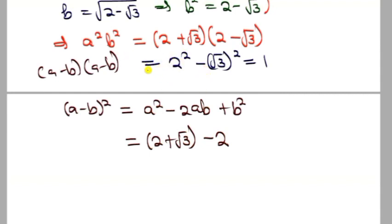We found that a²b² = 1, which means (ab)² = 1. Taking the square root gives us ab = 1.